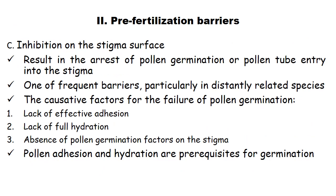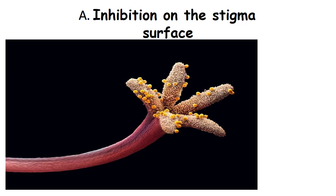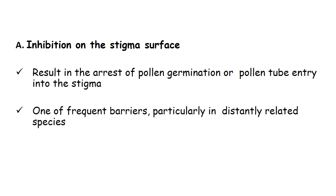The third point is inhibition at the stigma surface, resulting in arrest of pollen germination or pollen tube entry into the stigma. This is one of the most frequent barriers, particularly in distantly related species. Causative factors include lack of effective adhesion, lack of full hydration, or absence of pollen germination factors on the stigma. Pollen adhesion and hydration are prerequisites for germination. Mucilaginous substances and chemical adhesives are major causes of inhibition at the stigmatic surface.